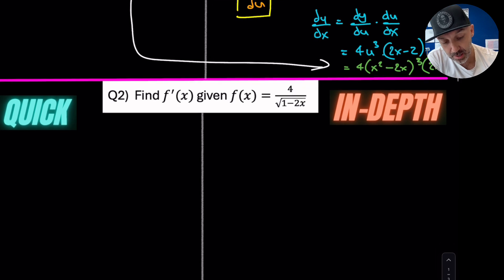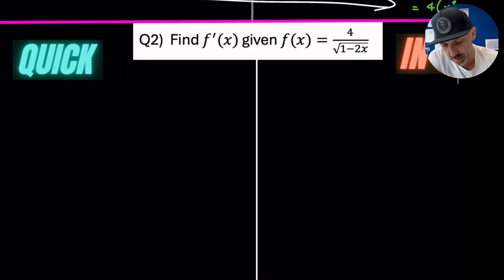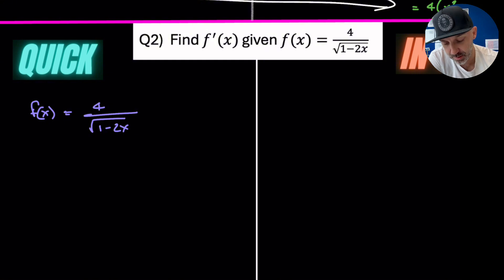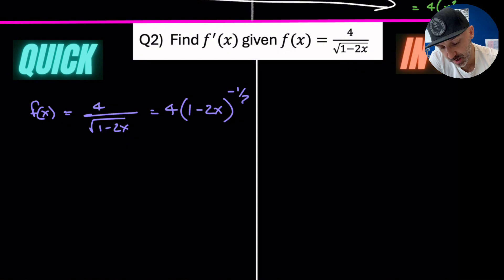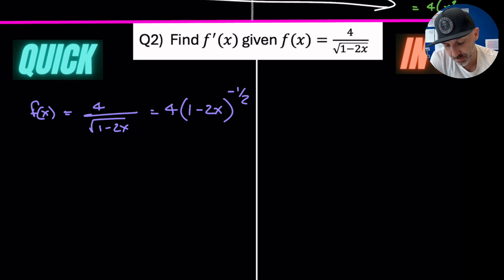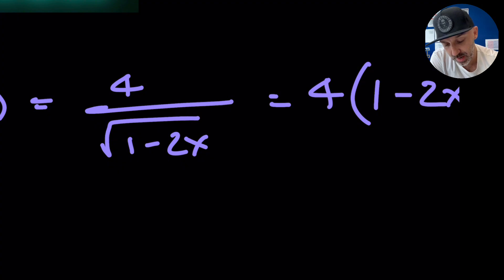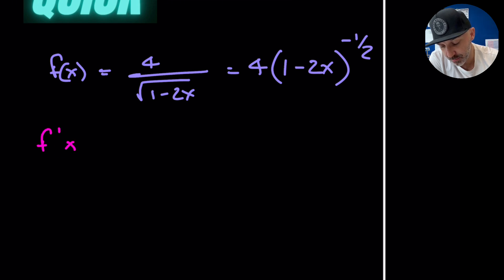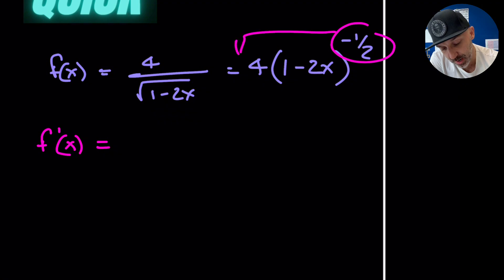Now let's go to the next example where I'll do the quick method first and the longer method second. If f(x) equals 4 over the square root of (1 − 2x), the very first step is to put that into index form — moving the root to the numerator means the power becomes negative one-half, so we have 4 times (1 − 2x) to the power of −½.